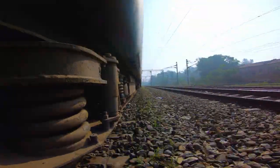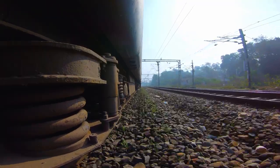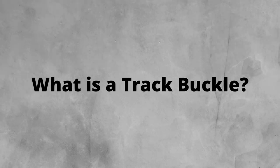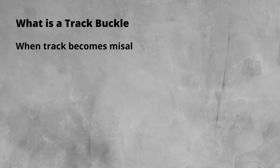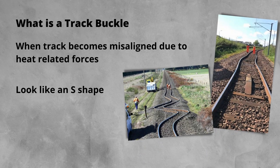But why do railway tracks buckle? Well, by the end of this video, you'll be able to explain it. Before we dive into that, what do we mean when we say a track buckle? A buckle is when the track becomes misaligned due to heat-related forces, frequently leading to an S-shaped look to it. This misalignment, depending on the severity, can have serious consequences, such as derailments.